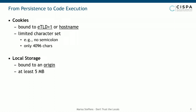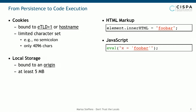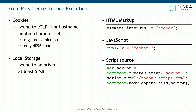Having talked about the sources we consider for persistent client-side storage, let's look at the different sinks we investigated to get stored values interpreted as code. There's HTML markup interpretation — for example document.write, innerHTML, and many others. There's also direct JavaScript execution, such as eval or setTimeout. More subtly, if a value is used inside a script's source attribute and an attacker controls that value, they can point the source to their own controlled web server and host a malicious payload there.